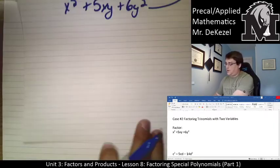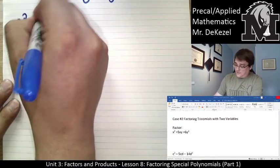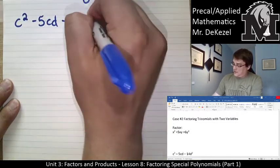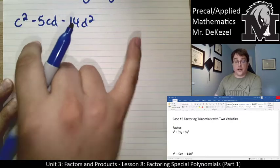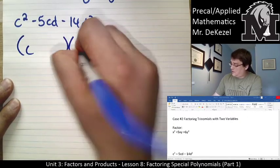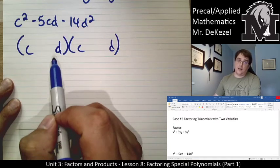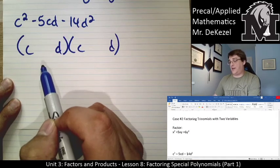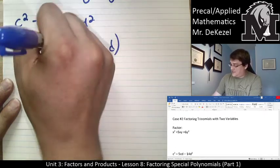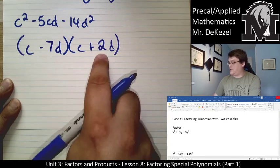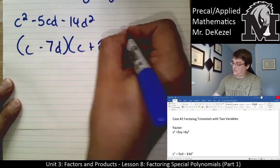Let's do another example where a is 1: c squared minus 5cd minus 14d squared. We put c at the front and d at the back of each binomial. Now we look for two numbers that multiply to negative 14 and add to negative 5. 1 and 14 doesn't work; 2 and 7 does. So we use minus 7d and plus 2d — multiplied together that's negative 14, added together that's negative 5. So the answer is (c minus 7d)(c plus 2d).